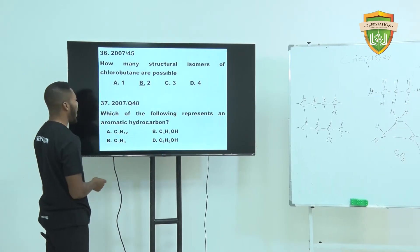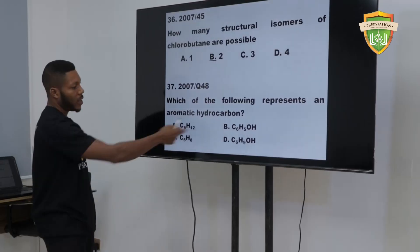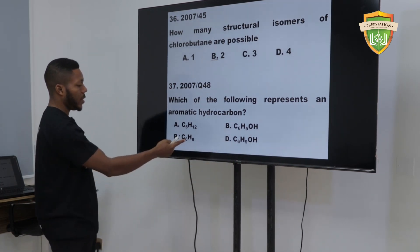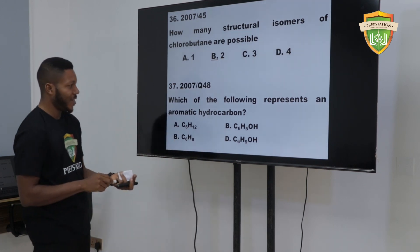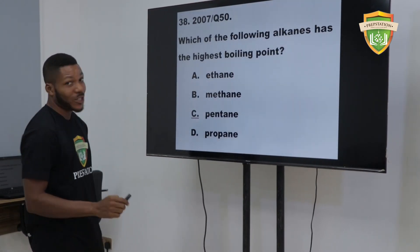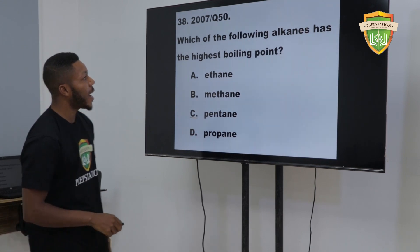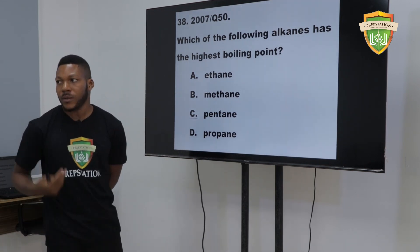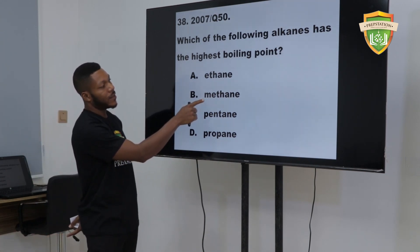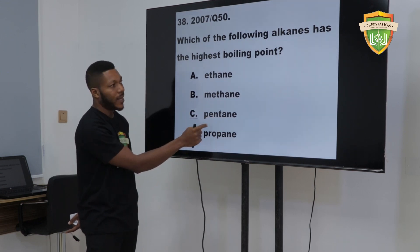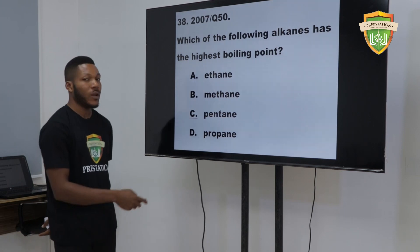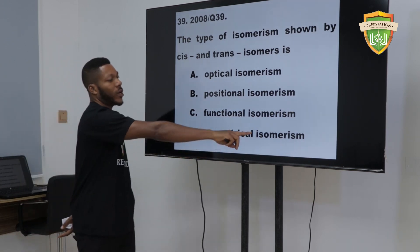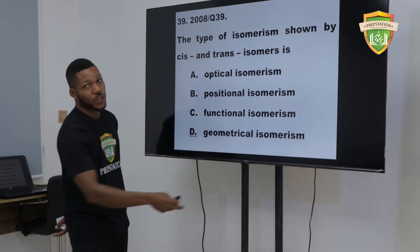Which of the following alkanes has the highest boiling point? Pentane, because the higher the carbon atom count, the higher the boiling point. Methane is first, followed by ethane, followed by propane. So pentane has the highest boiling point compared to the other options. The type of isomerism shown by cis and trans isomers is geometrical — don't even think twice. It's geometric isomerism, with spatial arrangements.